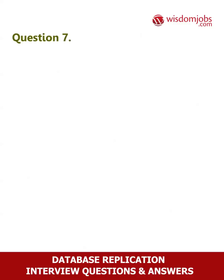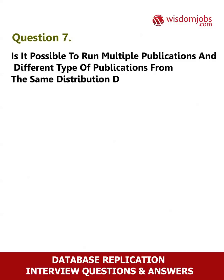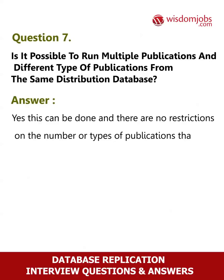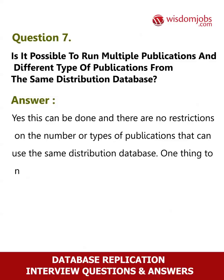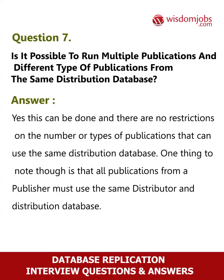Question 7: Is it possible to run multiple publications and different types of publications from the same distribution database? Yes, this can be done and there are no restrictions on the number or types of publications that can use the same distribution database. One thing to note, though, is that all publications from a publisher must use the same distributor and distribution database.